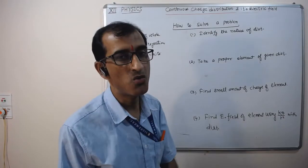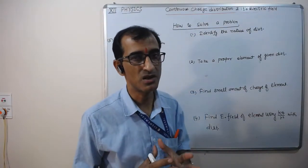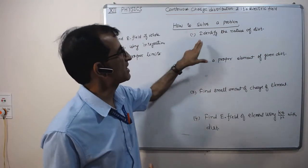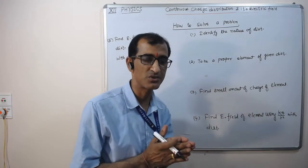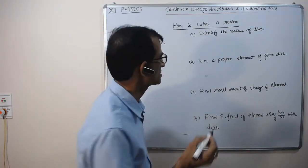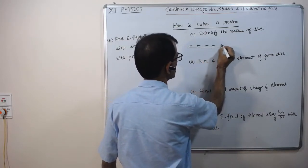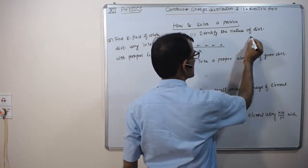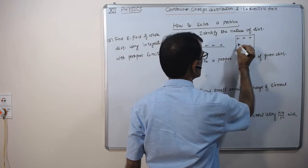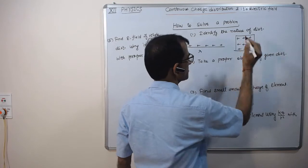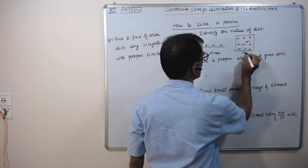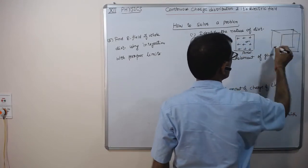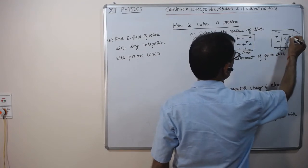How do we find the electric field of a continuous charge distribution? You follow these steps. First, identify the nature of the distribution: is it linear, surface, or volume? If the charge is on a wire, use linear charge density lambda. If charge is distributed over an area, use surface charge density sigma. If distributed in a volume like a cube, use volume charge density rho.